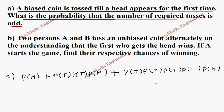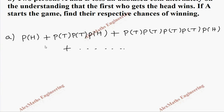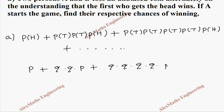We toss till head appears for the first time, and the series keeps going. We can represent this as: P (for success, getting head) plus Q·Q·P plus Q·Q·Q·Q·P plus dot dot dot. So it is an infinite geometric progression.